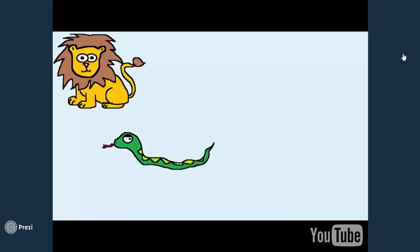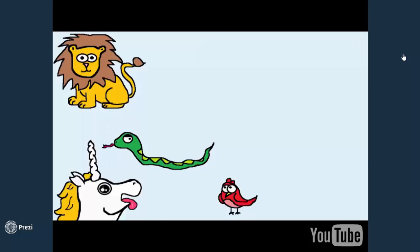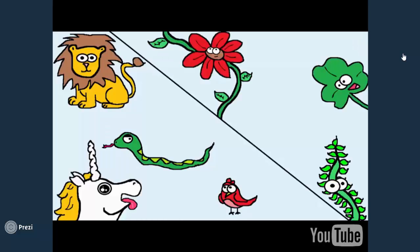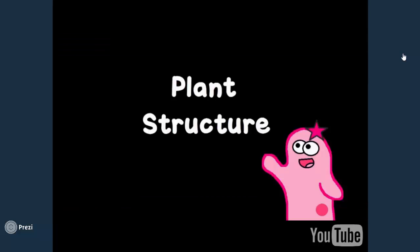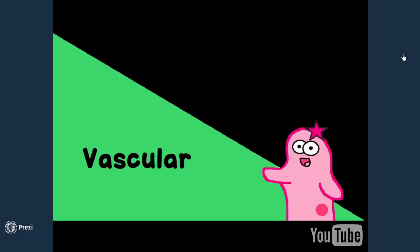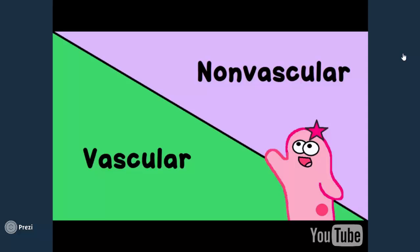Just like there are many different types of animals, there are many different types of plants as well. To get to plant structure, we need to outline two major plant categories: vascular and non-vascular.